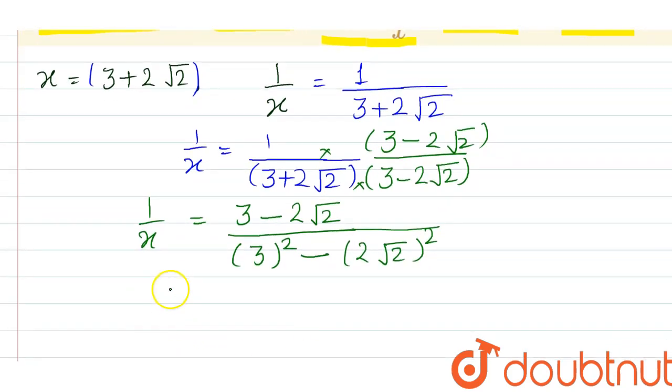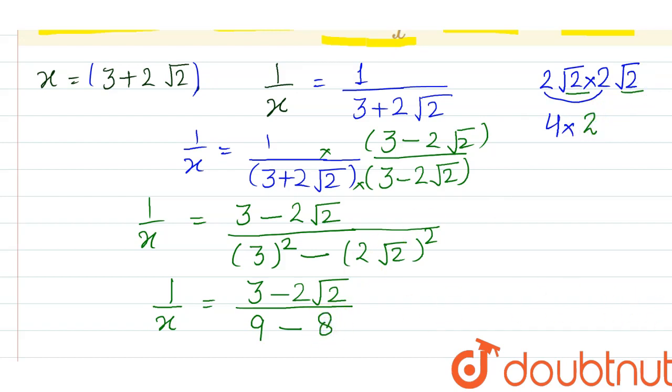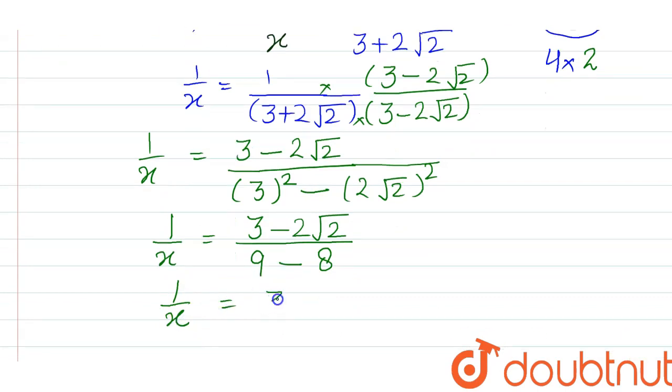Now further simplification: this is 3 minus 2 root 2 in numerator, and denominator 3 square is 9 minus 2 root 2 square. You can calculate on rough side also: 2 root 2 multiply by 2 root 2, so 2 and 2 multiply will be 4, and root 2 multiply root 2 gives you 2. So finally 9 minus 8. So 1 upon x value we are getting is 3 minus 2 root 2.